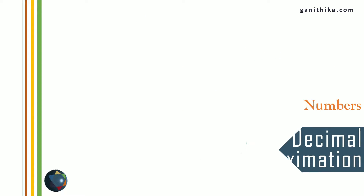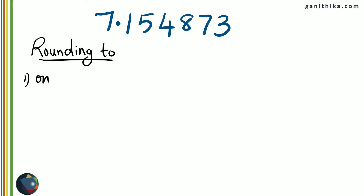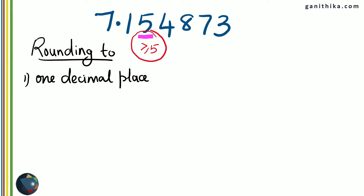Let's proceed further with decimal approximation, which is most commonly used in practical forms. Consider the decimal number 7.154873. Let's see how to approximate it to different decimal places. Rounding off to one decimal place: you consider the second decimal place, which is 5. If this number is greater than or equal to 5, you add 1 to the previous number and stop there. So you have 7.1, and since the second decimal place is 5, you add 1 to make it 2. Therefore, rounded to one decimal place, the answer is 7.2.